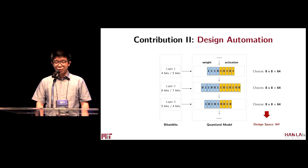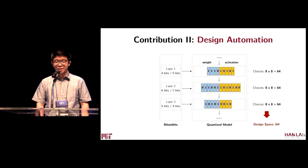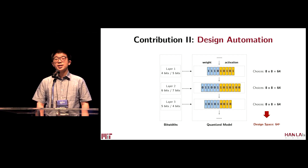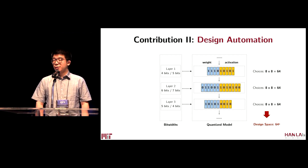However, the design space will become very huge. For each layer, the activations have eight different choices, from one to eight bits, and the weights also have eight different choices. Therefore, there are in total 64 different choices for each layer. If a model has N layers, the total design space will have the size of 64 to the N, which is very large to be fully explored by human explorers. How to find the best solution becomes a very huge challenge.